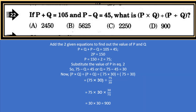If P + Q = 105 and P − Q = 45, then what is P × Q ÷ (P ÷ Q)? Adding the two equations: P + Q + P − Q = 105 + 45, so Q and −Q cancel out, giving 2P = 150, so P = 75. Substituting P in equation 2: 75 − Q = 45, so Q = 30.